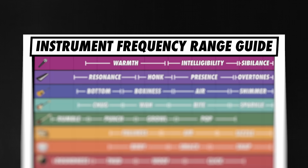If you want some help understanding the frequency range of various instruments, download the free instrument frequency guide below. It will help you identify which frequencies correspond to undesirable qualities for each instrument, like muddiness or harshness, as well as potentially desirable qualities like fullness and bite. It's a great tool for improving your ear for mixing, and you can get access for free at audiouniversityonline.com/instrument-frequency-guide or by using the link below this video.